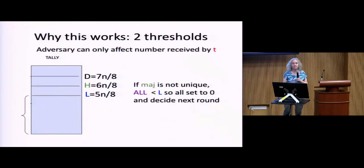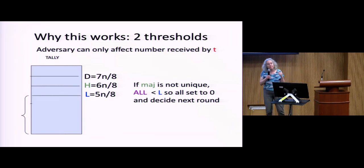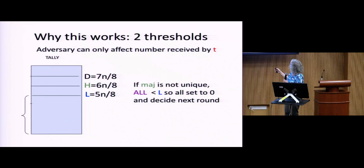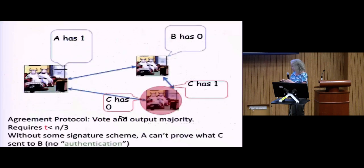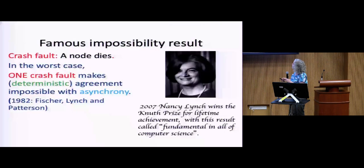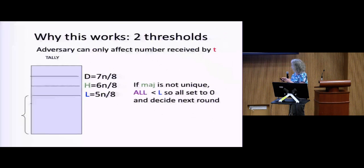Why does this work? The adversary can only affect the tally by T — the T bad guys can send whatever they want but can affect what you see by no more than T. Notice that these thresholds are separated by more than T. So if one node sees a tally in one category, the tally that another node sees has to be in a neighboring category.